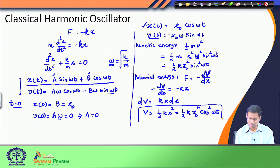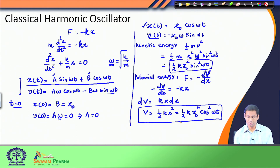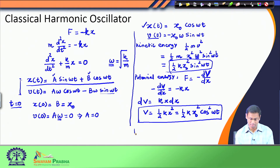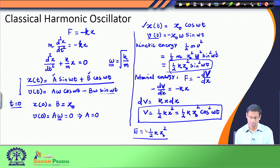So this is my potential energy of the harmonic oscillator and this is my kinetic energy of the harmonic oscillator. The potential energy is a cosine squared function and the kinetic energy is a sine squared function. If I add the kinetic energy and the potential energy — half·k·x₀²·sin²(omega·t) plus half·k·x₀²·cos²(omega·t) — the total energy E comes out to be half·k·x₀². This energy is independent of time, so the potential energy and kinetic energy are oscillatory functions, but the sum of the energy is constant.